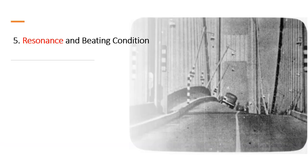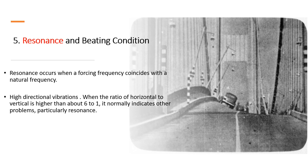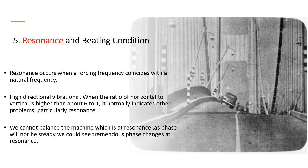The fifth reason is the resonance and beating condition. Resonance occurs when the forcing frequency coincides with the natural frequency. A key indicator is highly directional vibration — a ratio of 6:1 or higher from one direction to another (e.g., horizontal to vertical) normally indicates problems other than unbalance, particularly resonance. You cannot balance a machine at resonance, as the phase will not be steady, and you will see a 90-degree phase shift and a 180-degree phase shift as the rotor passes through resonance.